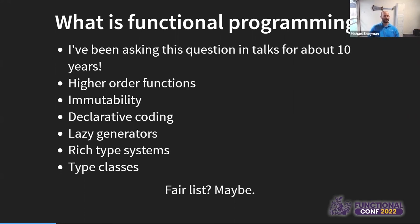You get some of these ideas: higher-order functions, immutability, declarative coding — which frankly I think is a cop-out on the functional programming part, because everyone claims they're doing some level of declarative coding. Lazy generators are typically part of functional programming; in Haskell we use lazy lists as our lazy generators. Many functional programming languages have rich type systems, and we'll get into type classes — those two really go together. Is this a fair list to define functional programming? Maybe.